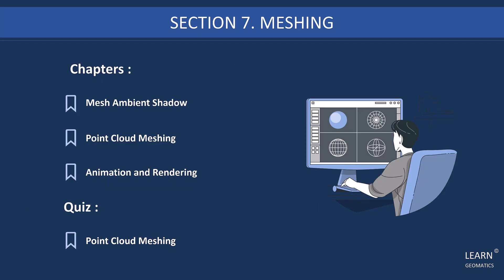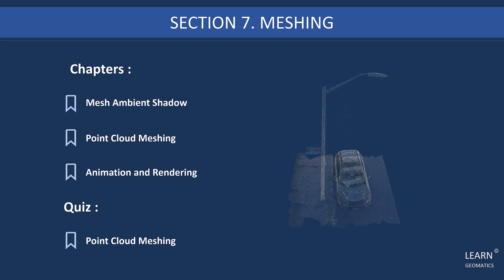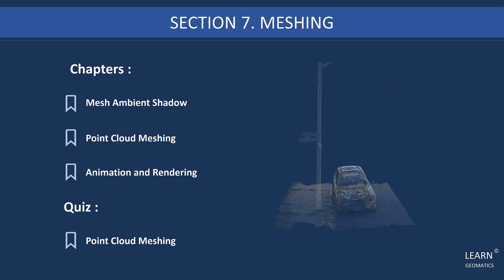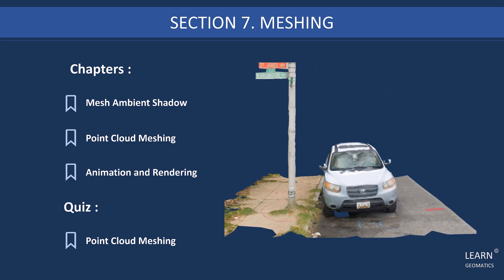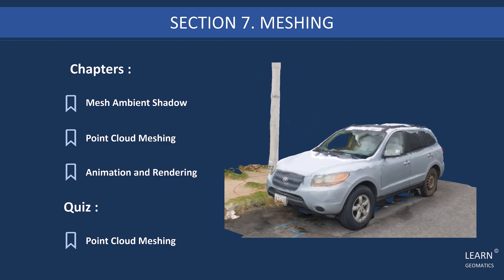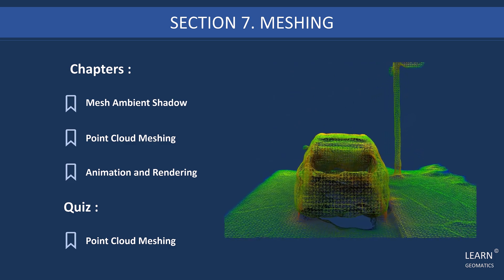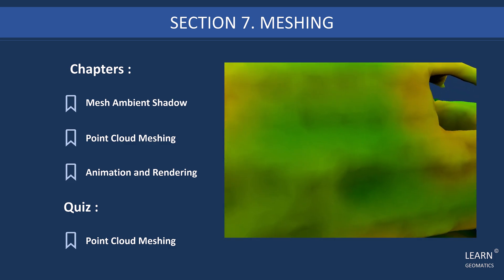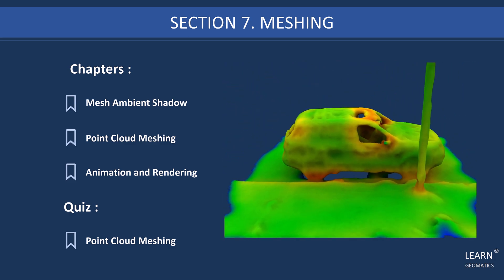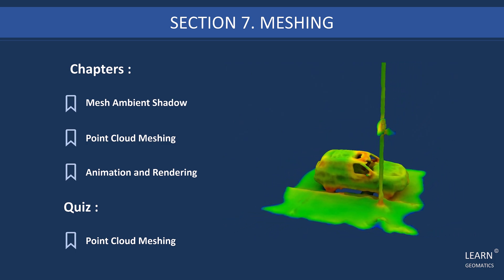In this section, we will learn how to create a mesh from a Point Cloud, which is useful for 3D modeling and visualization. First, we will explore how to create an ambient shadow effect on our mesh, which can add realism to our 3D models. We will then move on to the main topic of meshing, where we will learn how to turn a Point Cloud into a mesh. We will also cover techniques for improving the quality of our mesh, such as smoothing and simplification. Finally, we will explore how to make a good rendering and animation of our meshed Point Cloud.